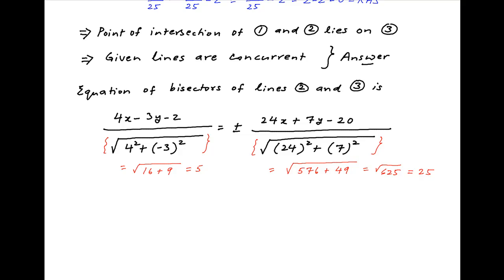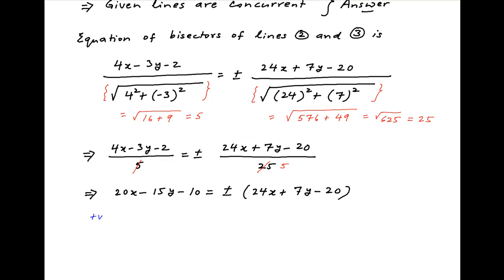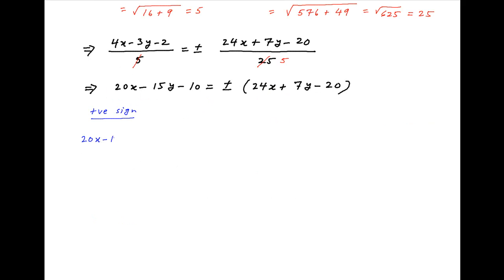Therefore the equations of the bisectors of lines 2 and 3 are (4x minus 3y minus 2) divided by 5 equal to plus or minus (24x plus 7y minus 20) divided by 25. This implies that 20x minus 15y minus 10 equals plus or minus (24x plus 7y minus 20). Taking the positive sign, the equation of the first bisector is 20x minus 15y minus 10 equal to 24x plus 7y minus 20, which simplifies to 4x plus 22y minus 10 equal to 0, or 2x plus 11y minus 5 equal to 0.